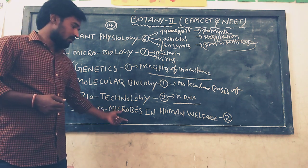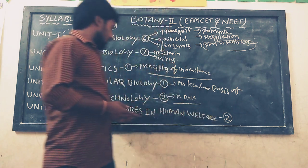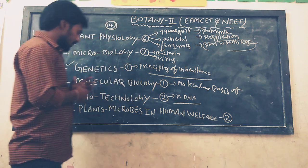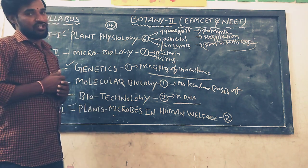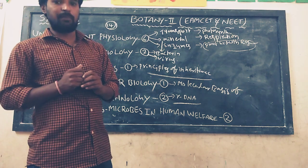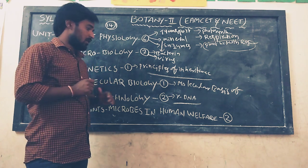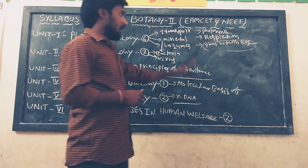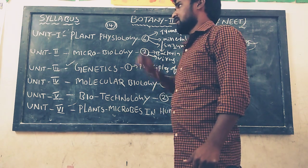The sixth unit is plants and microbes in human welfare, which contains two chapters. In the first chapter on useful plants, we will discuss plant breeding. In the second chapter on useful microbes, we will discuss biogas preparation, bio-fertilizer preparation, useful microorganisms, their applications, and their products.